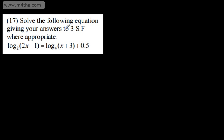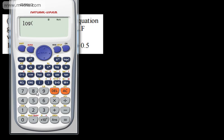In question 17, we're asked to solve the equation giving answers to 3 significant figures where appropriate. We have log to the base 2 of (2x minus 1) equals log to the base 4 of (x plus 3) plus a half. The bases are different, which gives rise to the change of base formula. One advantage of the change of base formula is that you can convert a logarithm to base 10 or base e for calculator evaluation, though modern calculators can handle various bases.